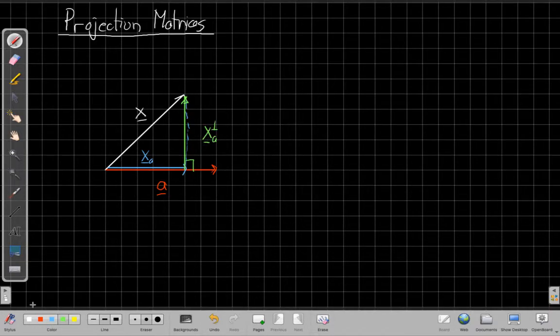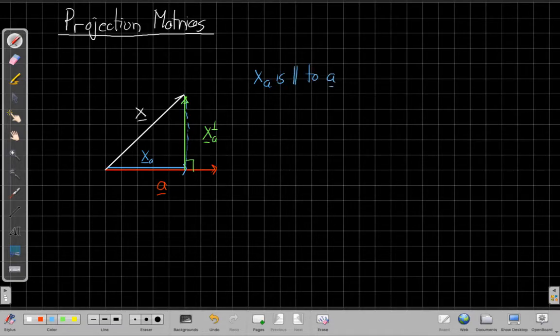So again, the key idea here is that x_a, x sub a, is parallel to this reference vector a, whereas this is x sub a complement or x orthogonal. Some people will call this with a little right angle symbol up here in the exponent, so it's perpendicular to a.